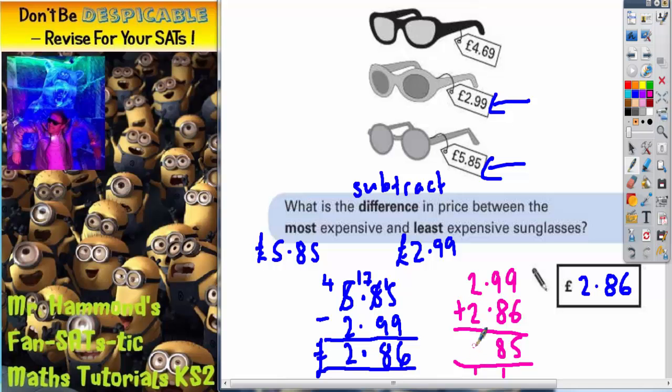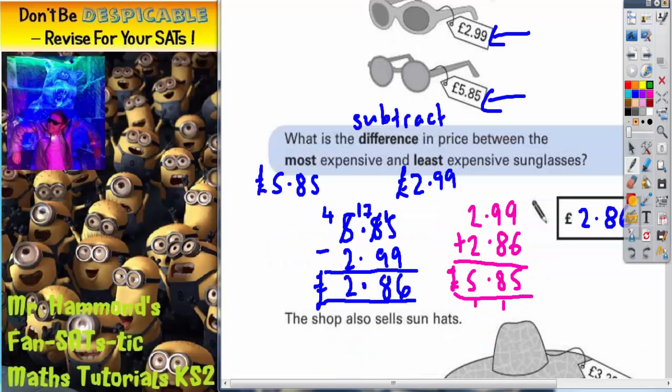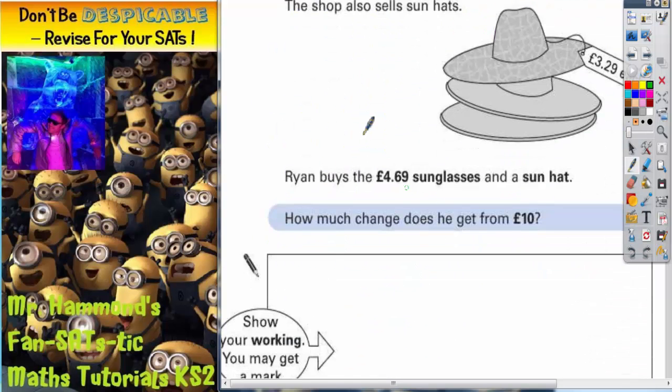And two plus two plus one is five, so it does get you back to £5.85. So the difference must be £2.86. Now let's scroll down with a different color to see what the next part is.